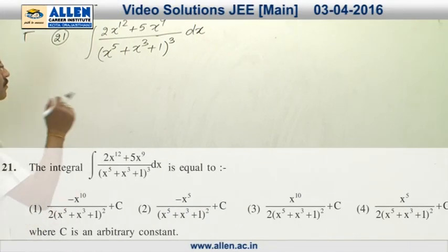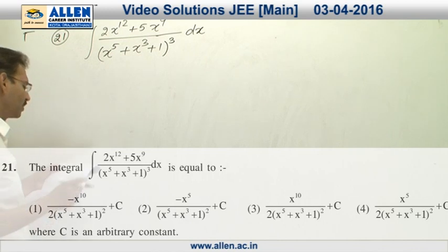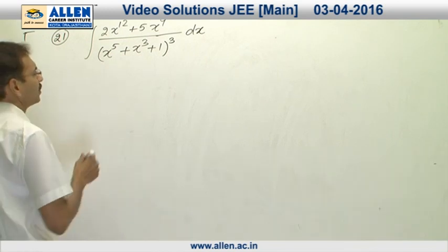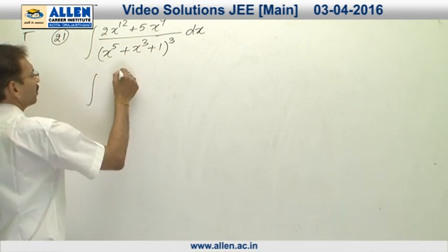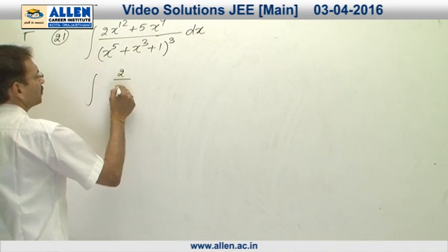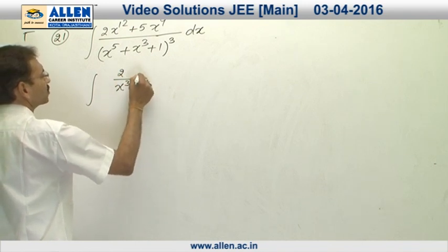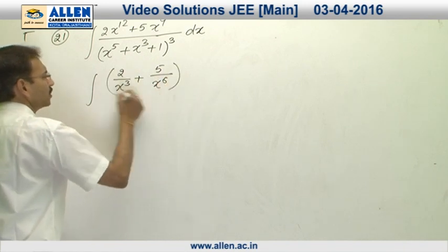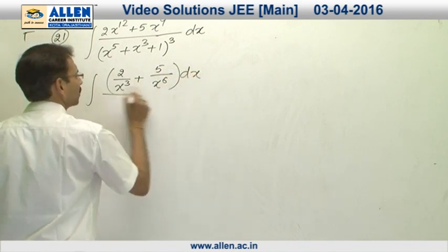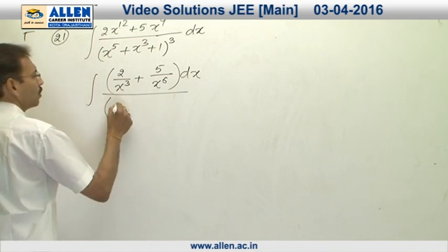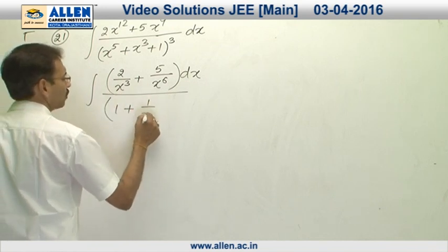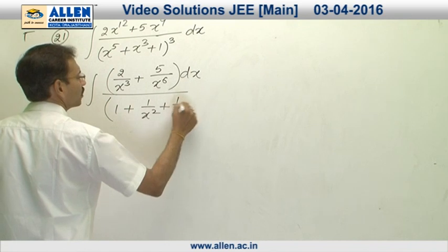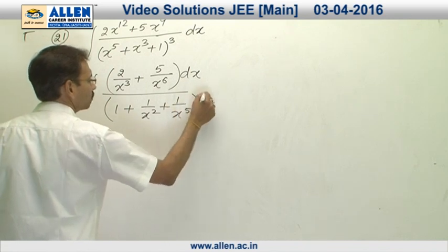In question number 21, we have to evaluate this integral. We will divide x raised to the power 15 in numerator and denominator. By division, we will obtain 2 upon x cube plus 5 upon x power 6 dx divided by 1 plus 1 upon x square plus 1 upon x power 5 whole cube.